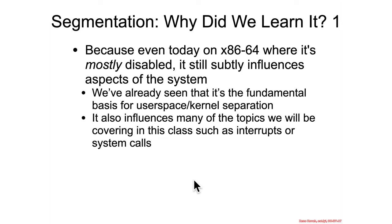So, segmentation — why did we even bother learning it? Well, it's still influential on the system because of things like backwards compatibility. Anytime you're going to be running 32-bit code on a 64-bit system, it's definitely going to be in play. But the most important reason for covering it was the reason given at the very beginning of the section: we want to understand at a deep level how privilege rings and permission separation works on the Intel architecture, and you can't do that if you don't understand segmentation.